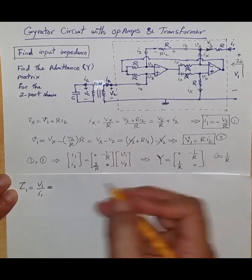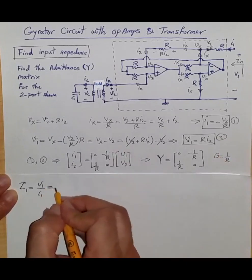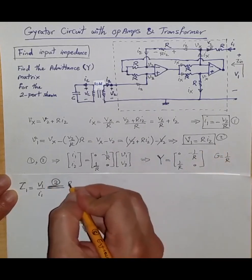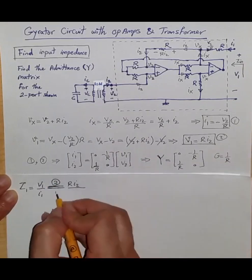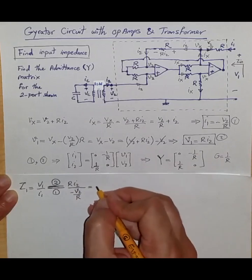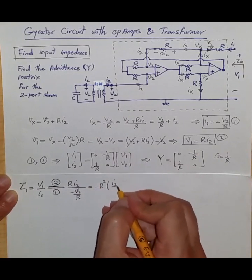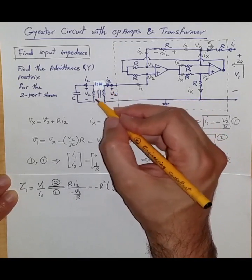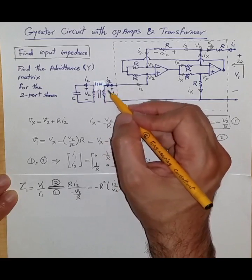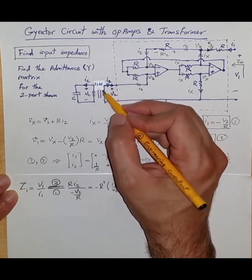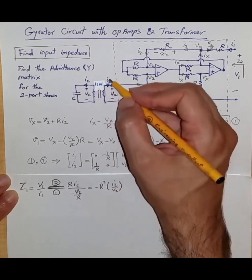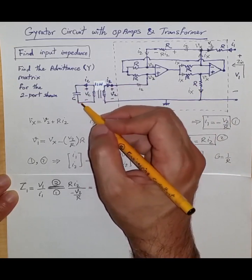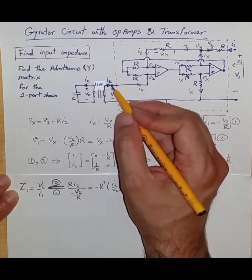Using the results from our two equations: V1 = R·I2 and I1 = -V2/R, we substitute to get Z_in = V1/I1 = R·I2 / (-V2/R) = -R²·(I2/V2). Now I2 and V2 are the current and voltage at the second port of the ideal transformer with 1-to-n turns ratio, where the secondary has n times more turns. The only passive device connected to the primary port of this transformer is a capacitor.